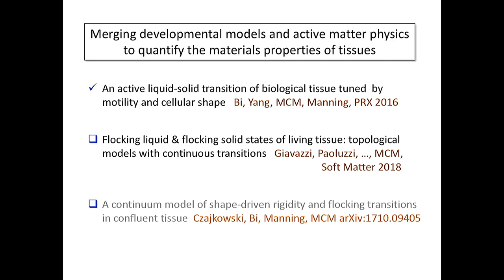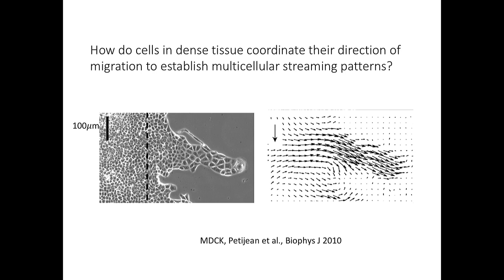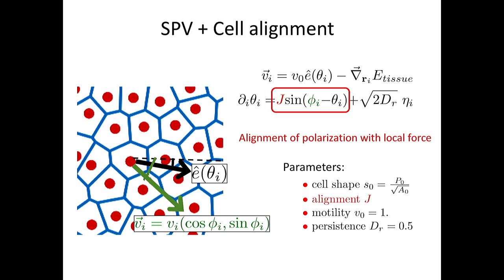Next I will add alignment to the model to produce a system that can move in a correlated way—that is, flock. The question is how cells correlate their motion, as seen in finger-like protrusions in wound-healing assays. To do this, I modify the angular dynamics: in addition to rotational noise, each cell has an alignment interaction of strength J by which it tends to align its direction of motility with the mean force—equivalently, the velocity of the cell. We now have the alignment strength J in addition to the shape parameter P₀, while motility and persistence are kept fixed.